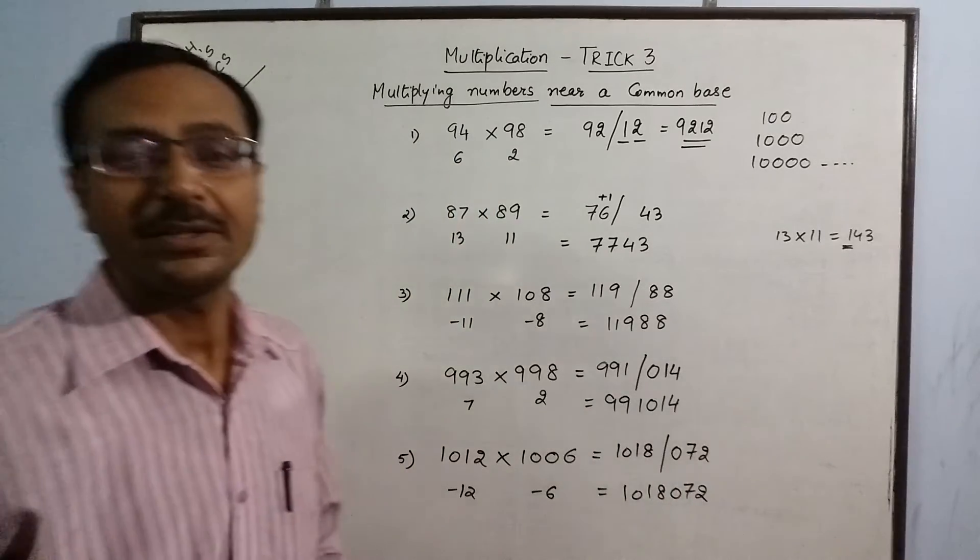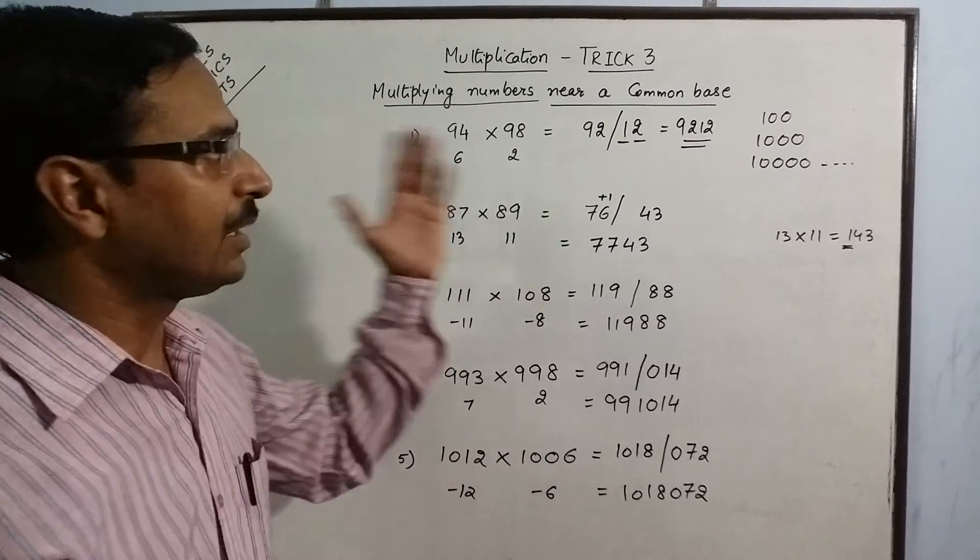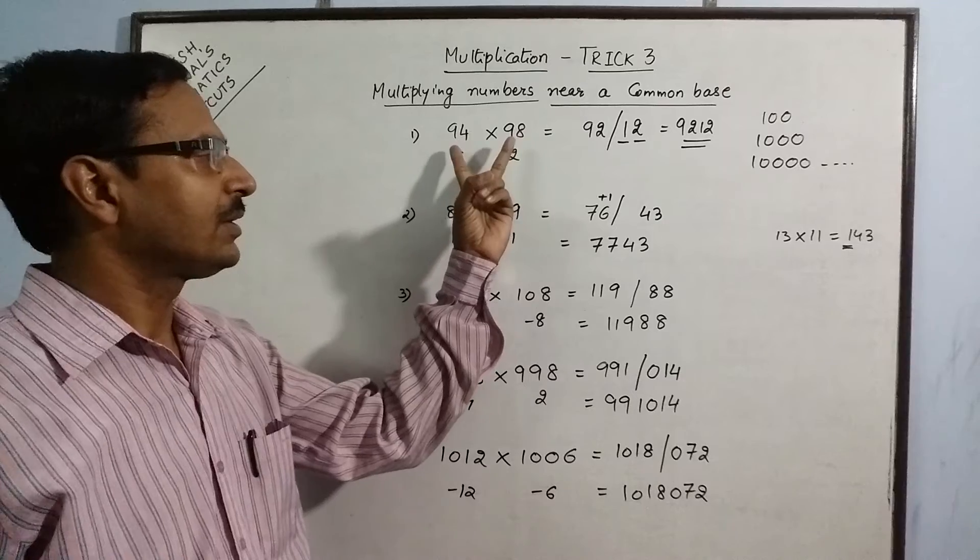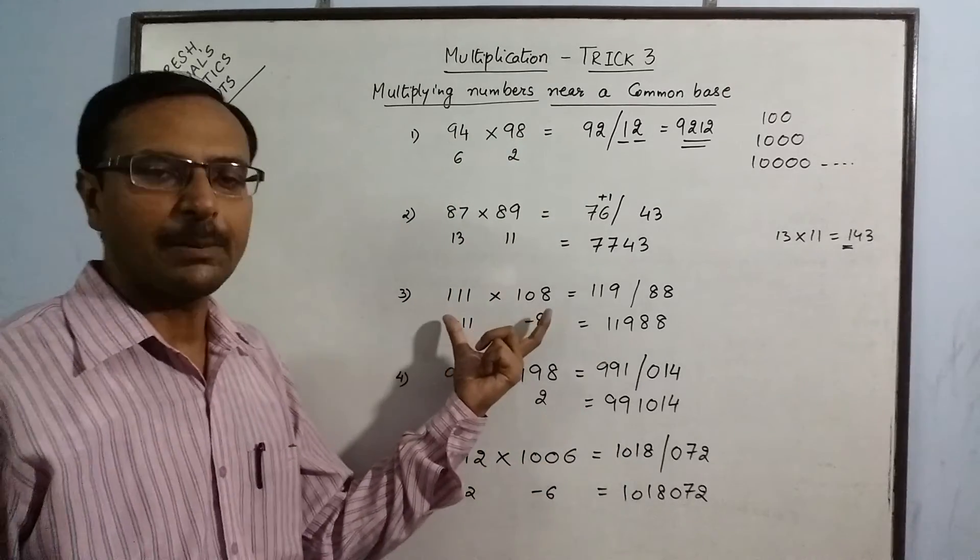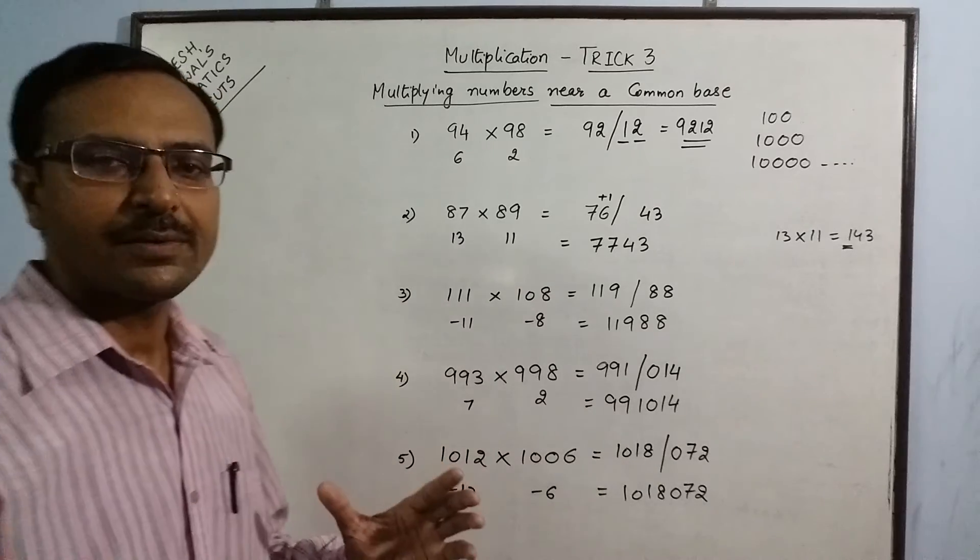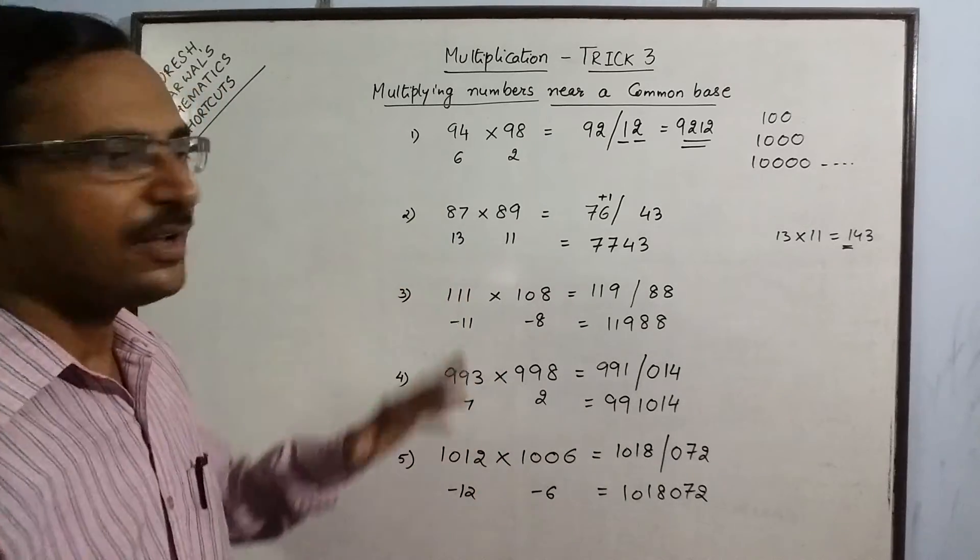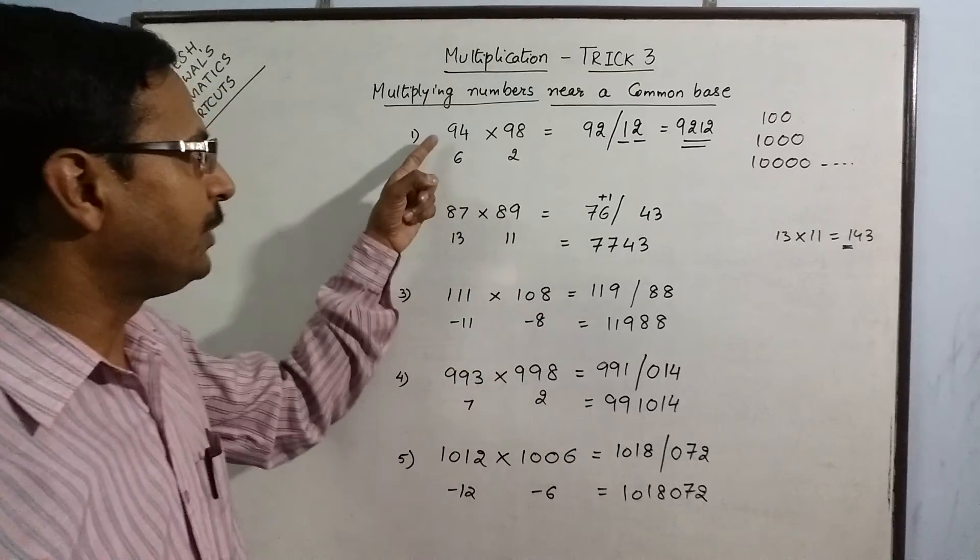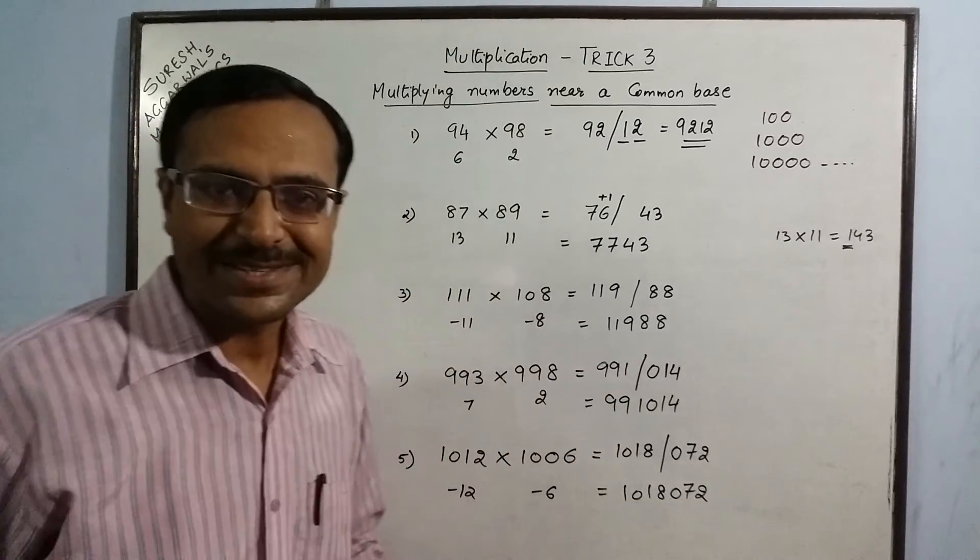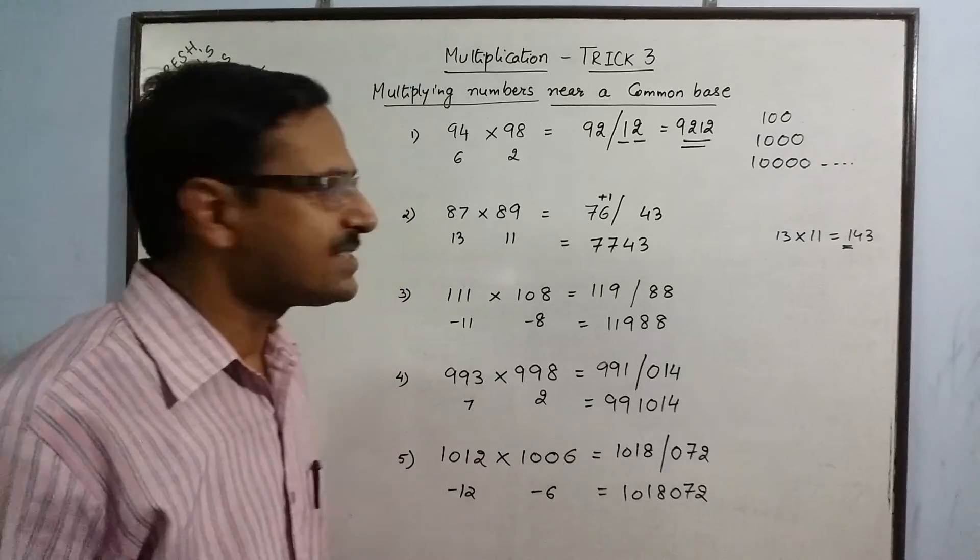So, this completes our method of multiplying numbers which have a common base. Both the numbers can be below the common base or both the numbers can be above the common base. If the numbers are different, that is, one is below the common base and other is above the common base, the method changes which we shall be describing in subsequent videos.